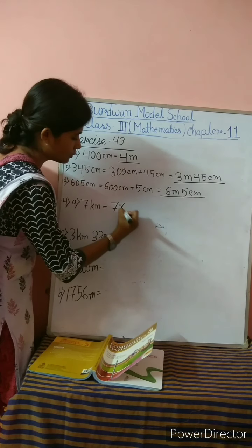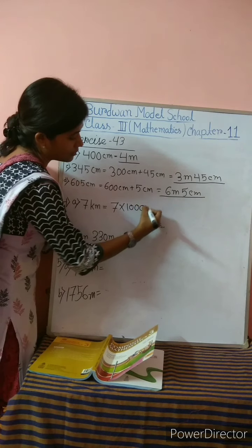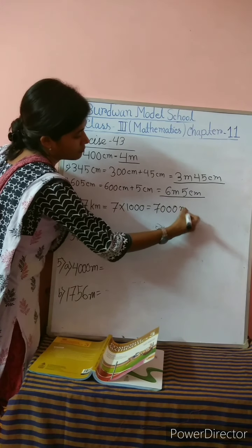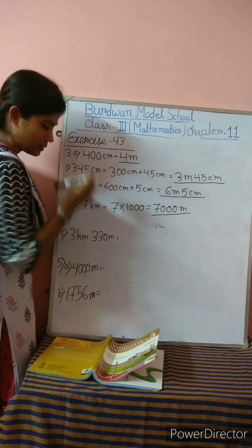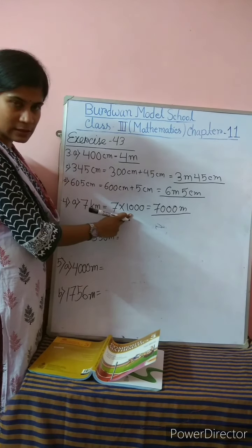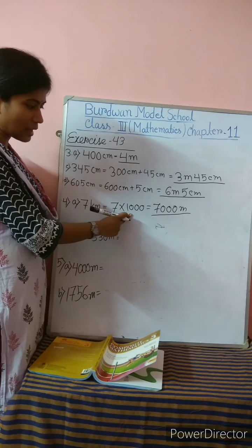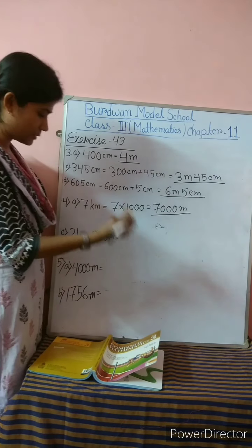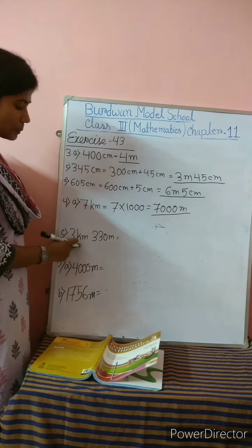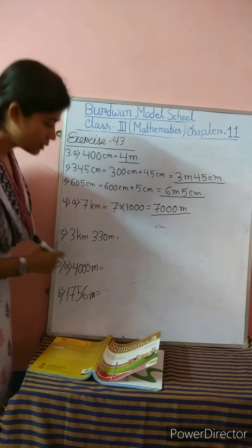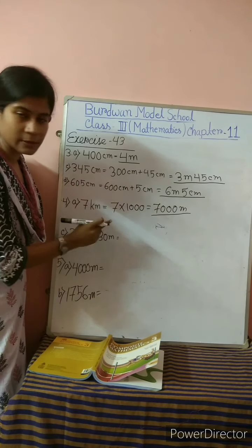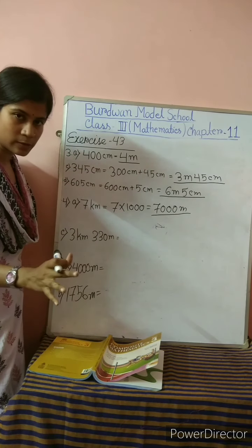Take another example: 605 centimeters. We can write it as 600 centimeters plus 5 centimeters. So 600 centimeters becomes 6 meters and 5 centimeters remains as is. Therefore, 605 centimeters equals 6 meters 5 centimeters. The rest of the number 3 problems you will practice by yourself.